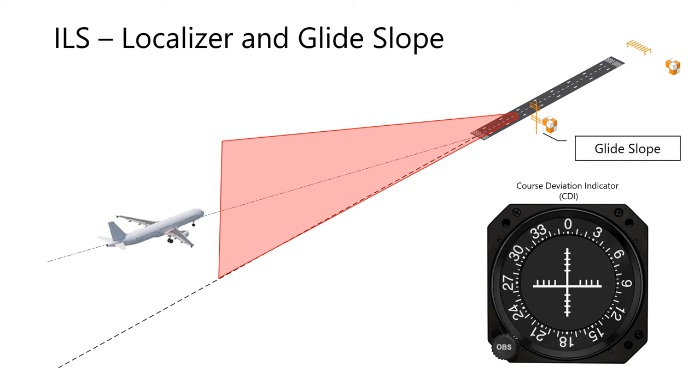The glide slope portion of the ILS provides the vertical guidance, or glide path, up to 10 nautical miles out. The CDI responds accordingly to bring the pilot back to the glide path.